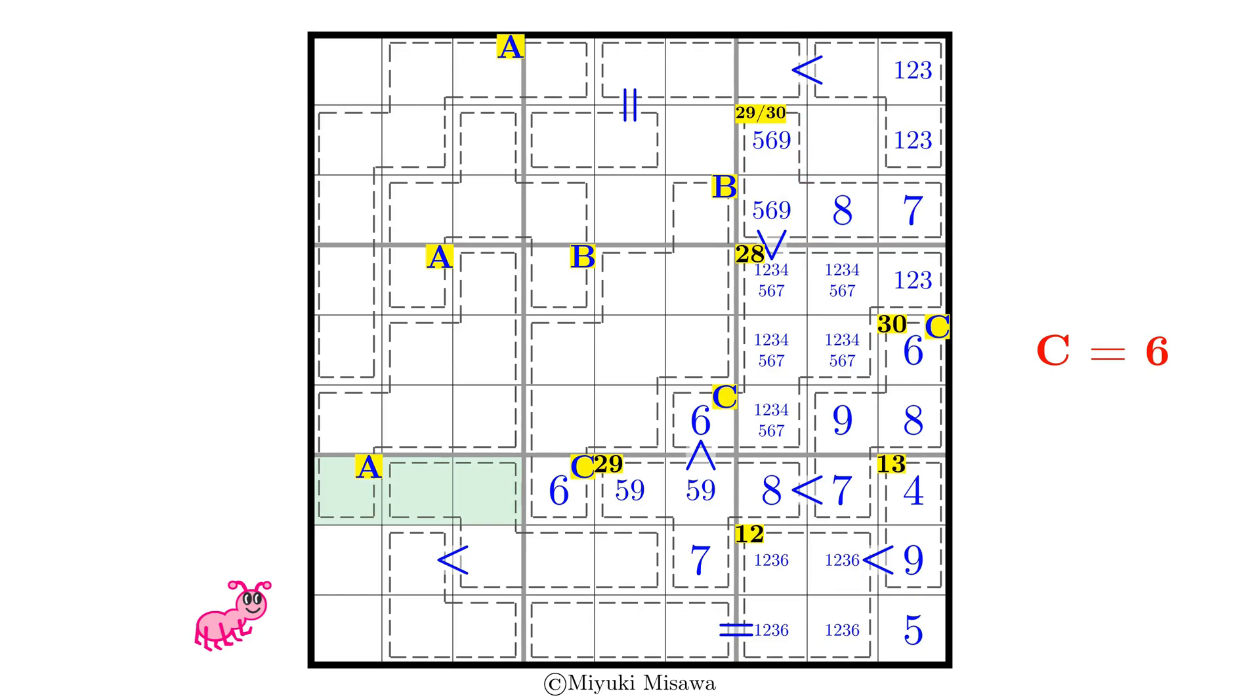Looking at the intersection of the 7th row and the bottom left box, we see there are only 1, 2, and 3 left to be there. Therefore that's what the values of A can be.